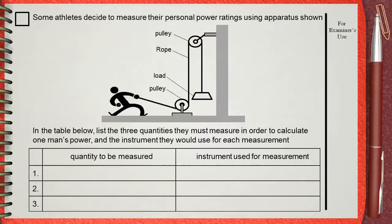Some athletes decide to measure their personal power rating using apparatus shown. In the table below, list the three quantities they must measure in order to calculate one man's power and the instrument they would use for each measurement.